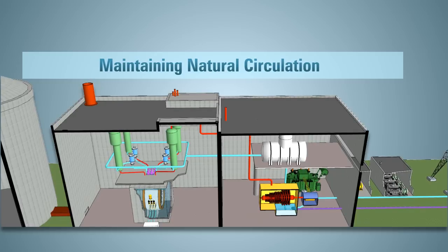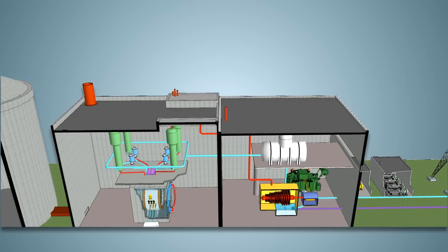At this point, to maintain natural circulation, pressure relief valves on the steam generator system open automatically to remove heat.